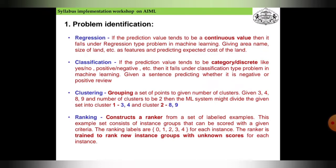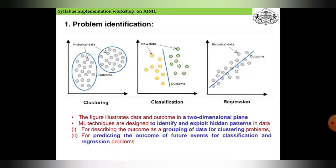The next one is ranking. Ranking constructs a ranker from a set of labeled examples. This example set may consist of instance groups that can be scored within a given criteria. The ranking levels are 1, 2, 3, 4, and the datasets will be arranged in accordance to the orders.